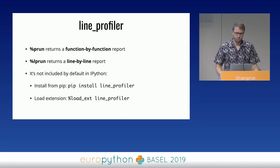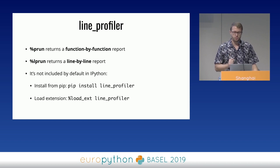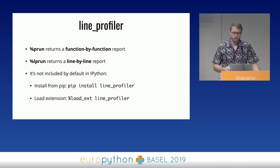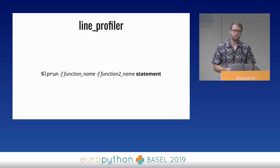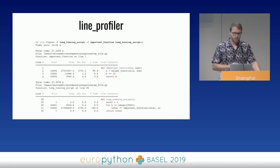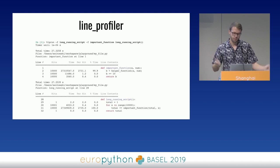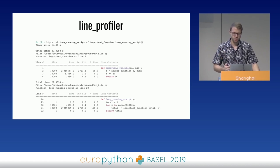Another profiler is the line profiler. While `%prun` reports how much time each function took, `%lprun` gives you even more detailed line-by-line information. Since this profiler isn't included with IPython by default, you have to install it from pip and load it as an extension. Once done, you can use `%lprun`. You need two things: a statement to execute and which functions to profile. For example, running `long_running_script` and profiling `long_running_script` itself and `important_function`. The line profiler generates a report for each function showing how many times each line ran, how much time Python spent on it, and what percentage of total running time it represents.